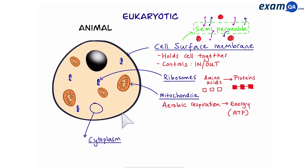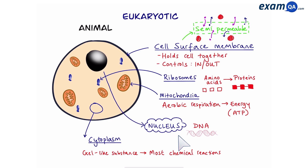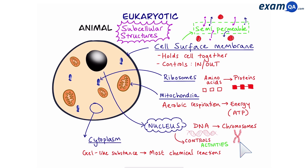The majority of the cell is a gel-like substance called cytoplasm, which allows important chemical reactions to take place. Finally, we have the nucleus. In the nucleus we have a molecule called DNA, which is coiled up into structures called chromosomes. This controls the cell's activities. All five of these are called subcellular structures or organelles.